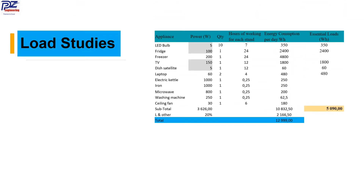Now let's go to our load studies. We have appliance power quantities. The total power is 3.626 kilowatts. We have the quantity, the working hours of each appliance, and the energy consumption per day — which is power times quantity times hours of working — giving us the energy consumption in watt-hours. We have our essential loads and total loads.